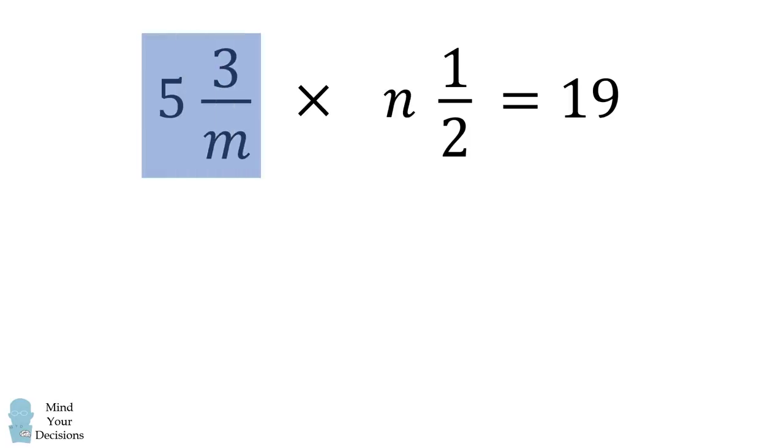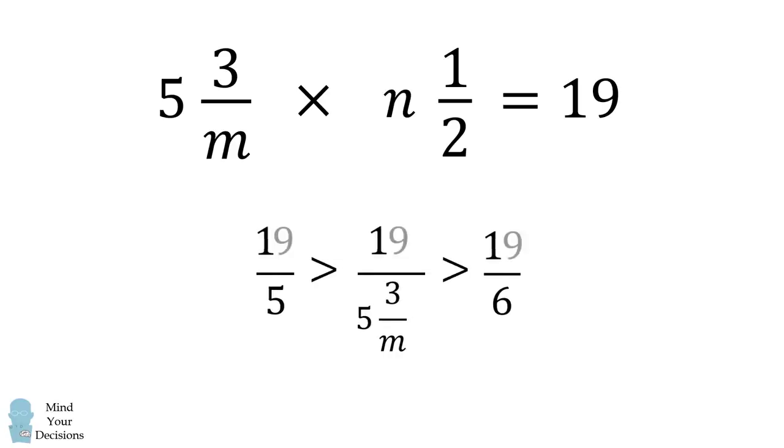Let's focus on the term 5 and 3 over m. Notice that it's between 5 and 6. Also, all of these numbers are positive. So if we take the reciprocal of each term, we will flip the inequality sign. We can then multiply each term by 19.